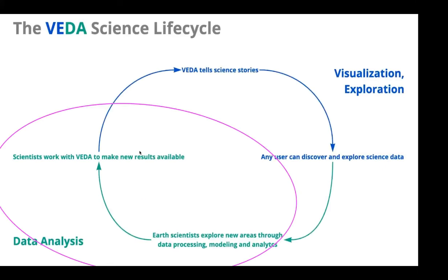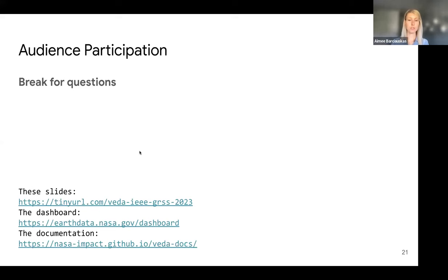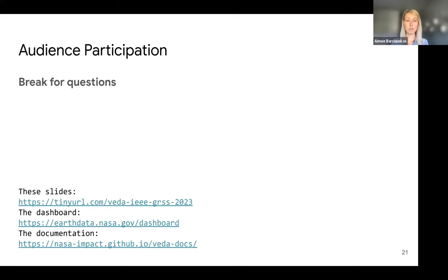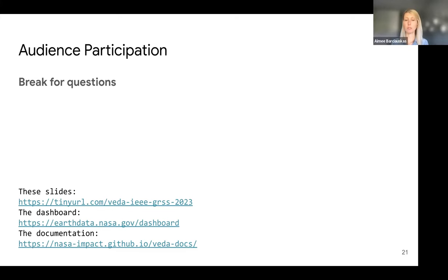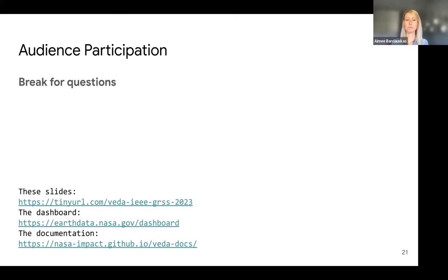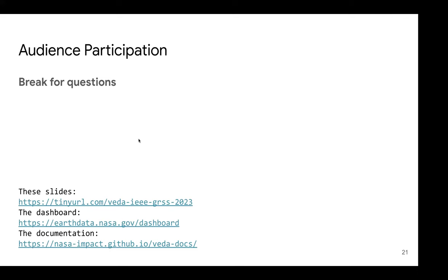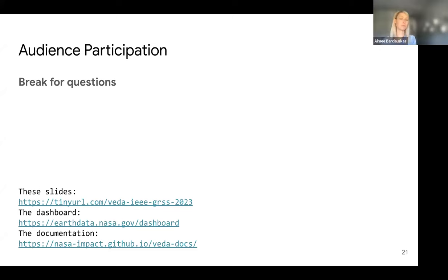Arun from India asked about multispectral data. I don't think we have any multispectral data at the moment - it's spatial temporal data. He also asked about soil data. I believe we do have soil moisture data in there, though I haven't explored it myself. It will be helpful to provide the link to the STAC catalog browser, which will help people understand what we already have. I want to clarify that all the data that are part of VEDA right now are driven by science use cases - it's a highly curated set of authoritative datasets.